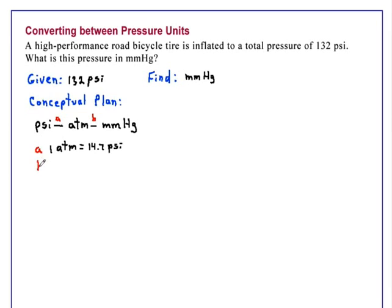In relationship B, we know that one atmosphere is equal to 760 millimeters of mercury. So now we're ready to solve the problem.